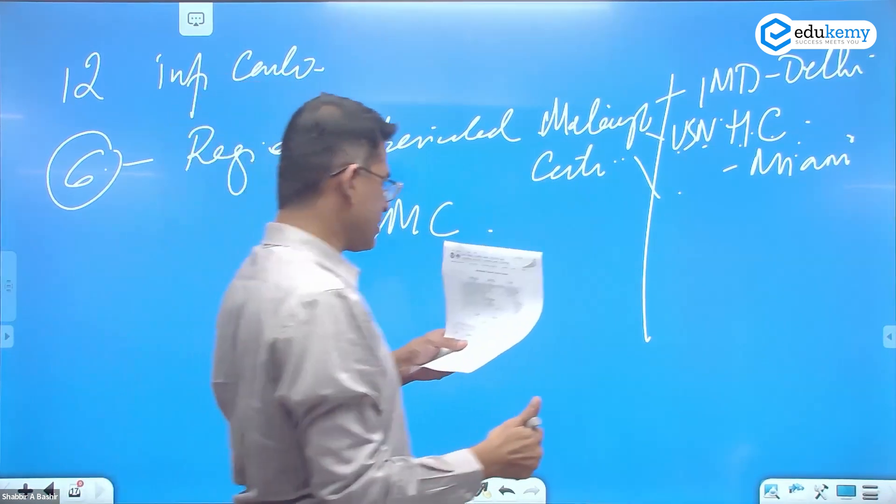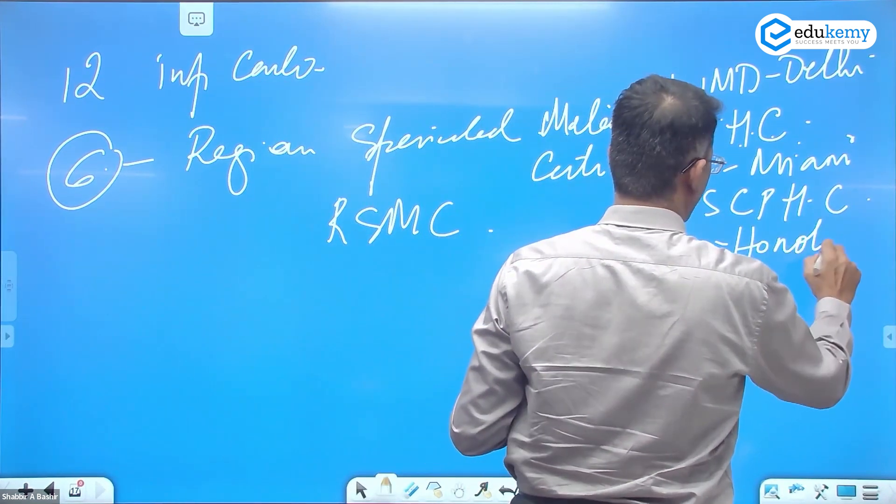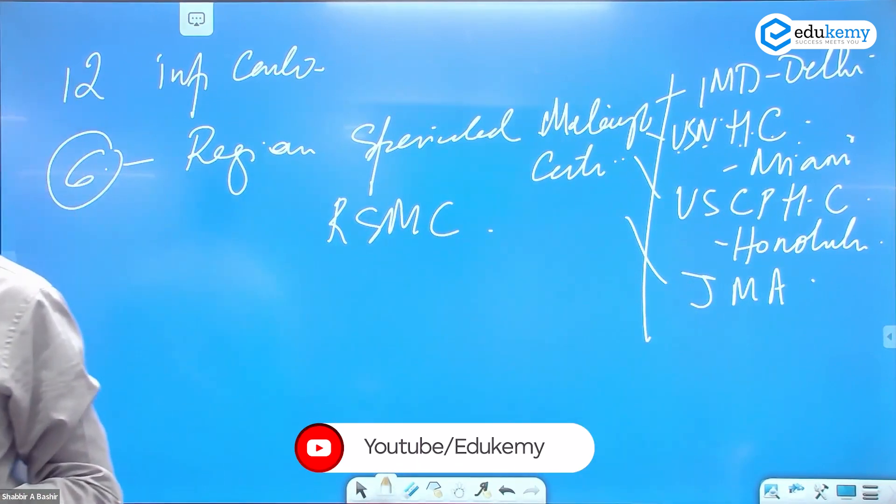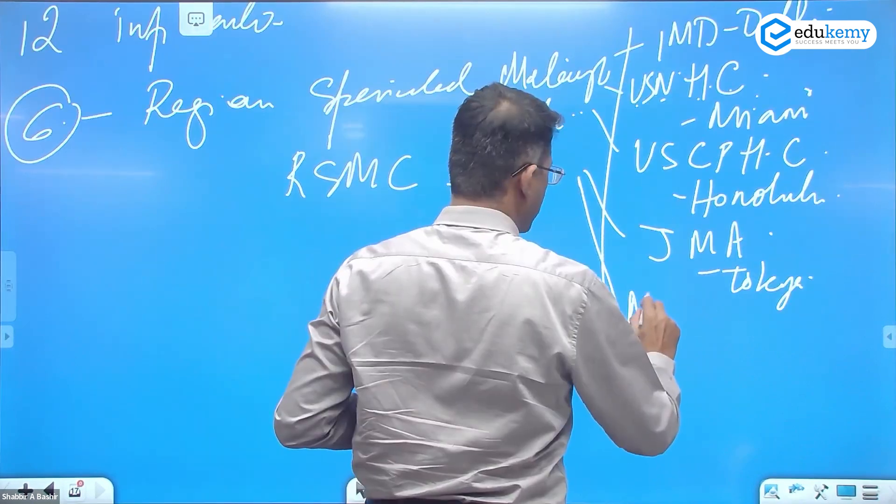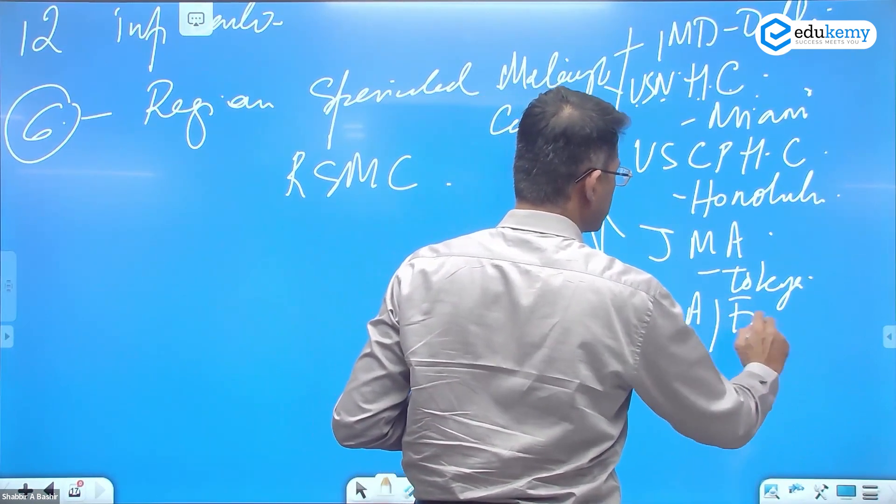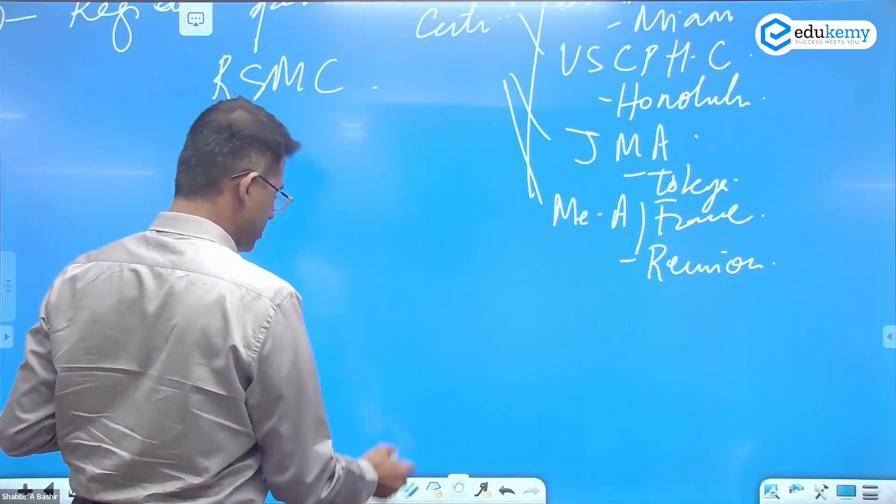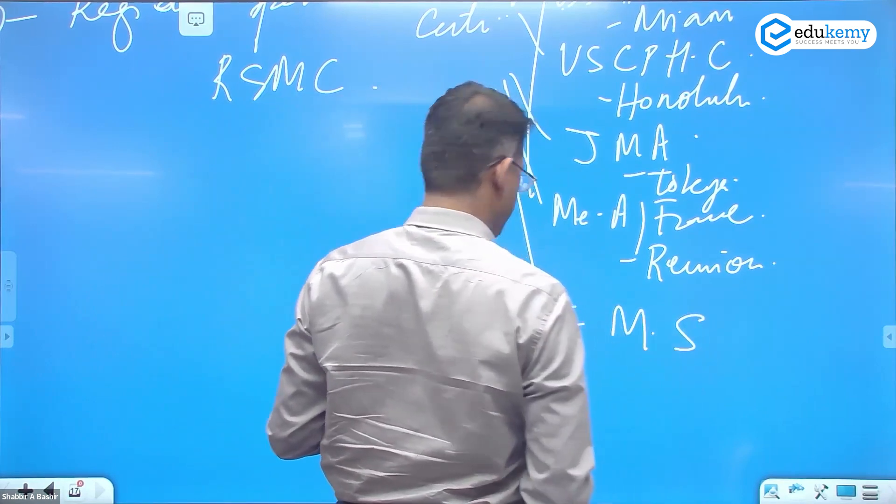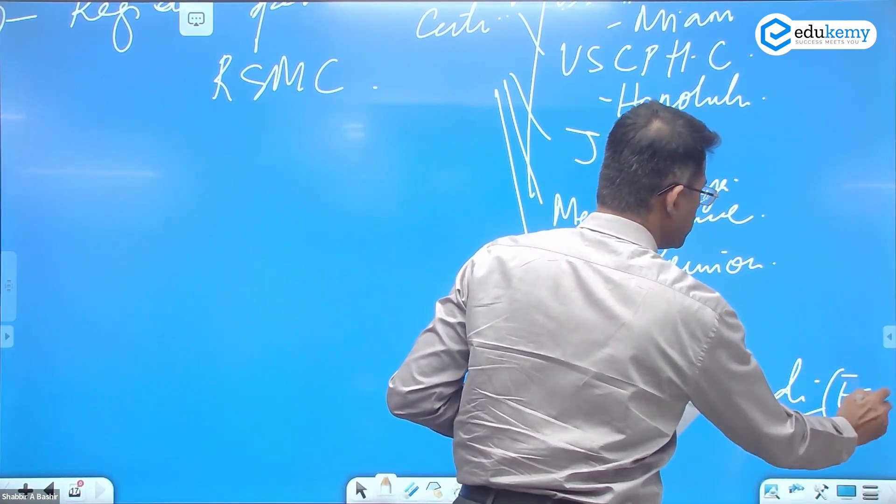Then we have US Central Pacific Hurricane Center in Honolulu, Hawaiian Islands. Japan Meteorological Agency in Tokyo. Meteorological Agency of France in Reunion Island. And Fiji Meteorological Service in Nadi, N-A-D-I, in the Fiji Islands.